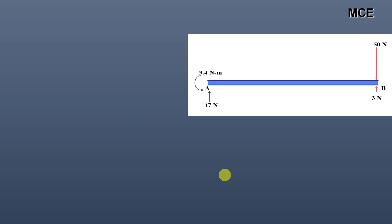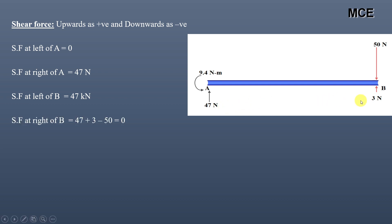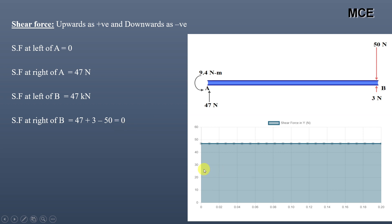Drawing the shear force diagram, taking upward forces as positive and downward as negative: shear force just to the left of A is 0, just to the right of A it is +47 N, remains 47 N up to the left of B, and at the immediate right of B it is 47 + 3 − 50 = 0. The shear force diagram is a constant rectangle of 47 N.